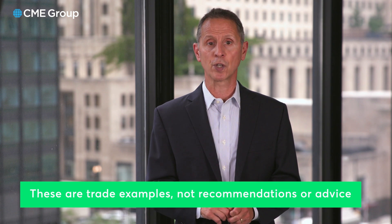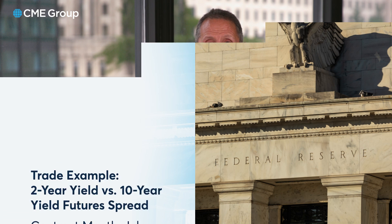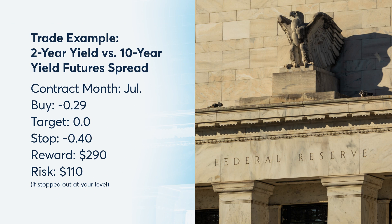If a trader believes that the curve could steepen back to zero, they could buy the July Micro 2-Year versus 10-Year Treasury Yields contract at negative 0.29 and target a move back to zero. A stop for this trade could be placed below at negative 0.40. This trade could make $290 if the target is reached and risks $110 if stopped out. Remember that this trade gives you two individual positions in the underlying contracts, so stops will have to be monitored manually.